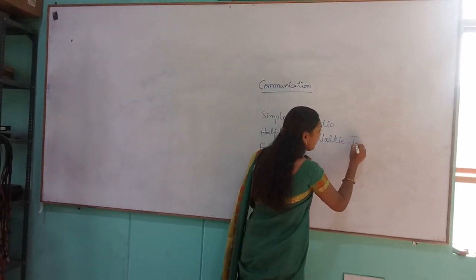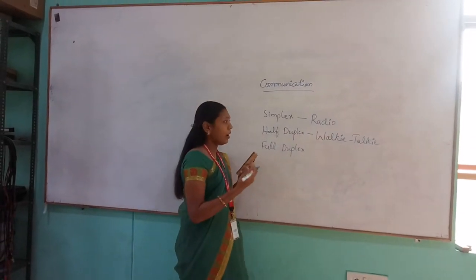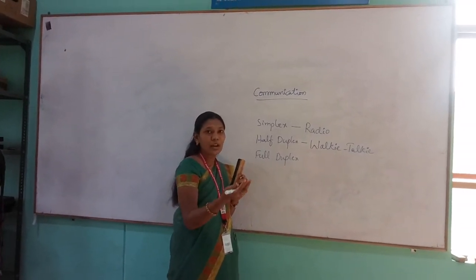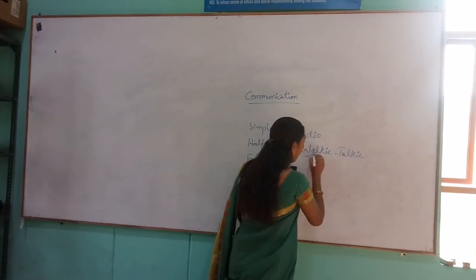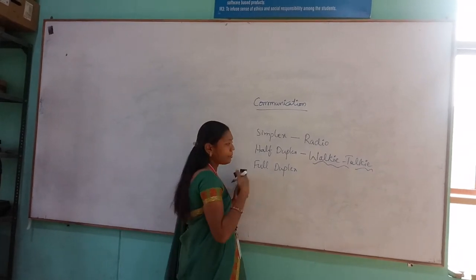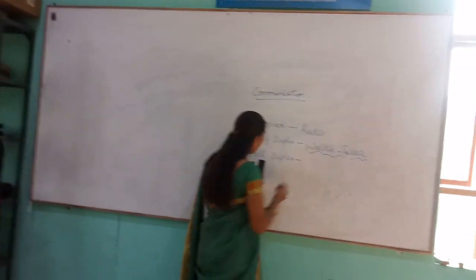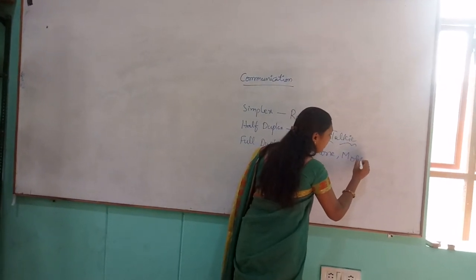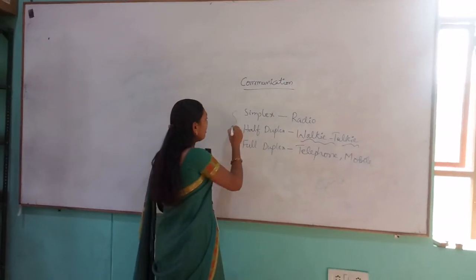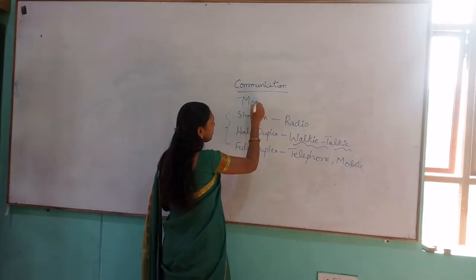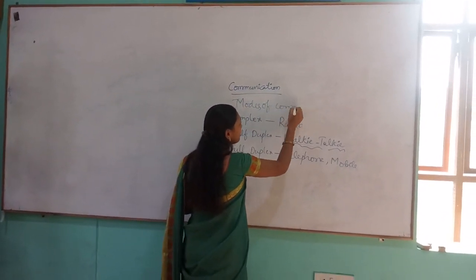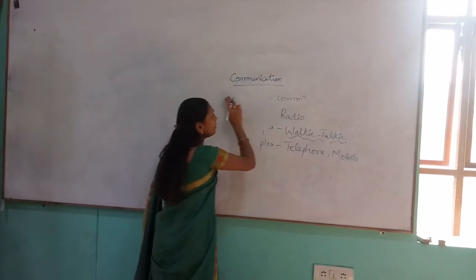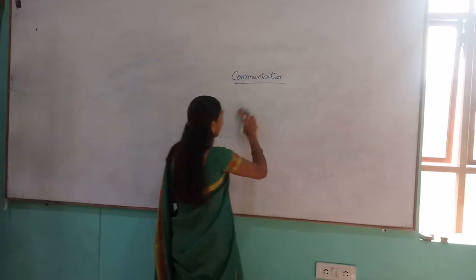So in walkie talkie, what we will be doing is nothing but we will give an answer or a question, and after some pause that person will be getting the answer from us, then they will respond. So there is a time gap between the person who is talking and who is going to react. And full duplex is nothing but a telephone or mobile phone where you can immediately respond to the person who is on the call. So these are the types of modes of communication — simplex, half duplex, and also full duplex.